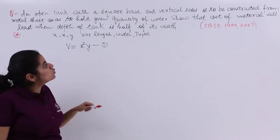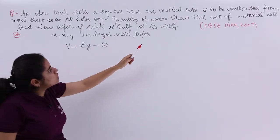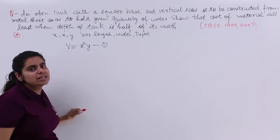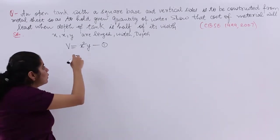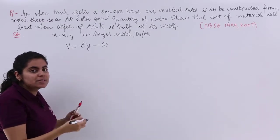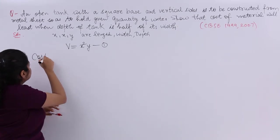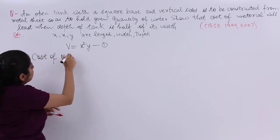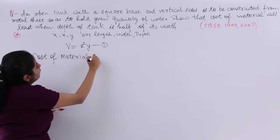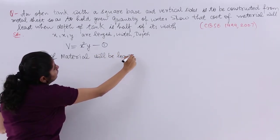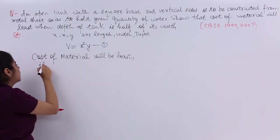Next, it is talking about 'show that the cost of the material will be least'. Cost of material will be least when surface area is least, right? So you are going to differentiate surface area with respect to one variable.